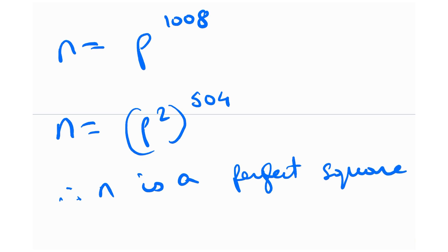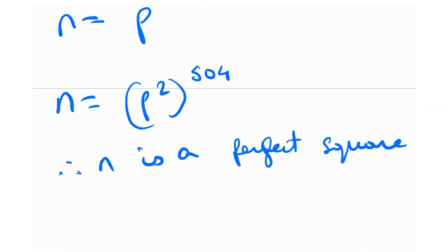And that is effectively what we had to prove. It's a pretty interesting question — we've seen similar variations in other contexts like the British Math Olympiad. The key was using set theory and bijections, and once you establish that n² has 2017 divisors, the rest follows from the primality of 2017.